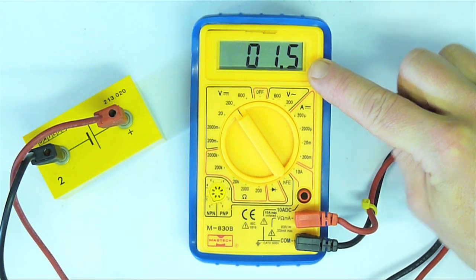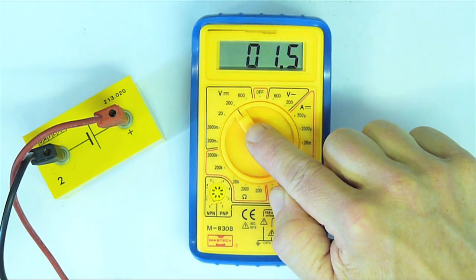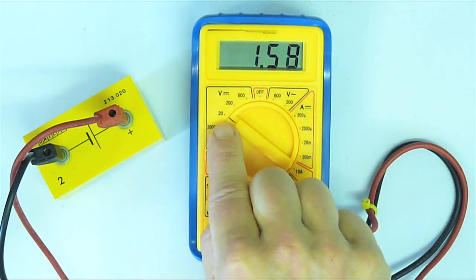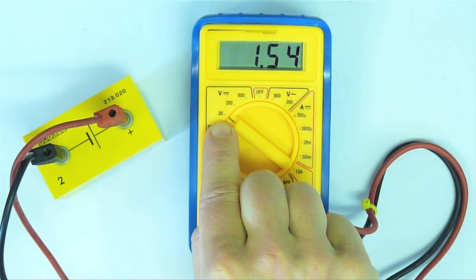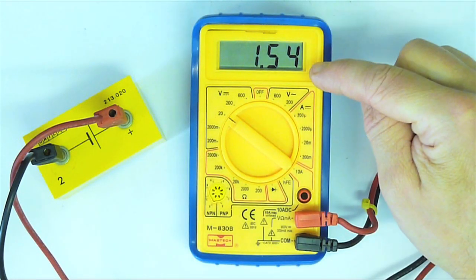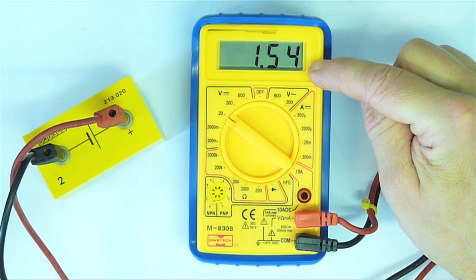I can be more precise by moving to the next lower range. This range is 20 volts full scale deflection. My reading is now 1.54 volts.